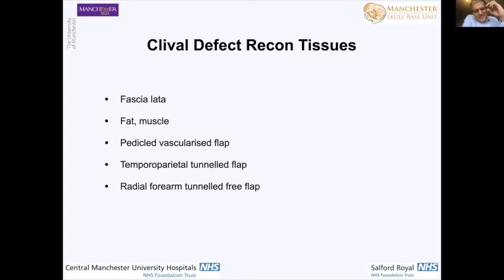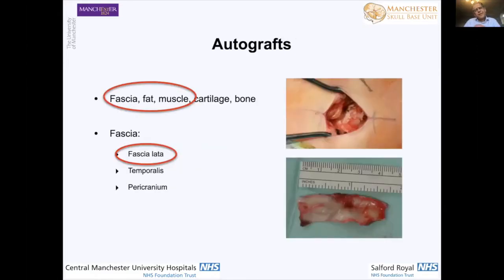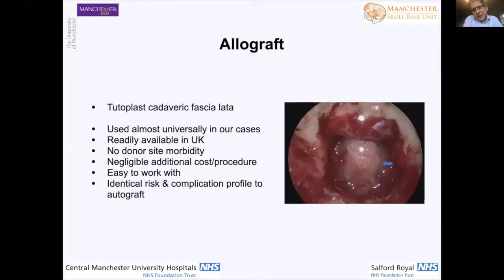For some of the more challenging cases — post-radiotherapy or multiply operated-on patients — we've used the temporoparietal fascial flap tunnelled via the infratemporal fossa, and a free flap in an instance or two, the radial forearm free flap tunnelled in that pre-vertebral space to the site of surgery. Our go-to autograft materials are fascia and fascia lata particularly. But in our practice, we almost exclusively use allograft — donated or cadaveric fascia lata which has gone through a Tutogen process and been irradiated.